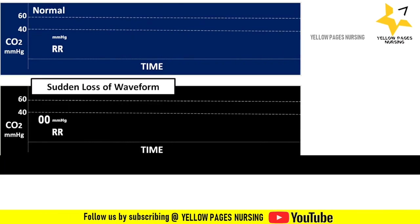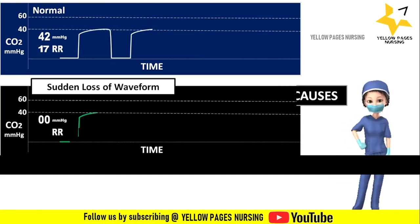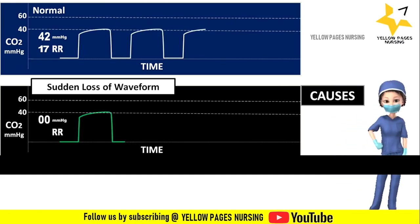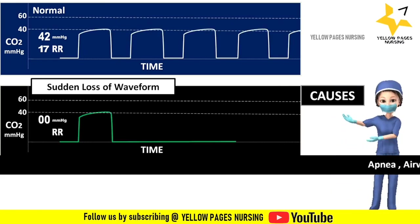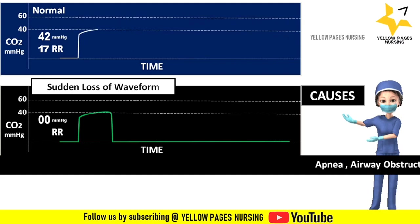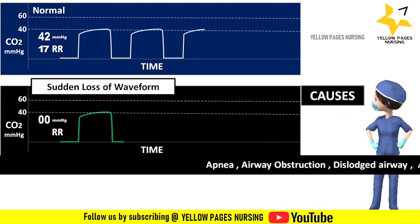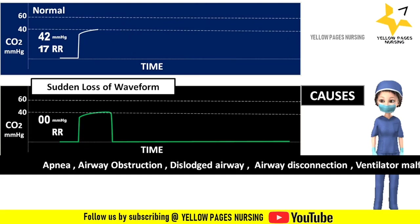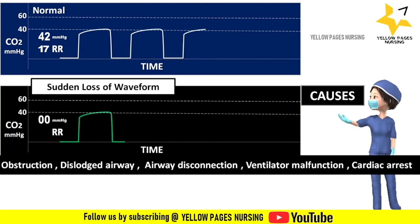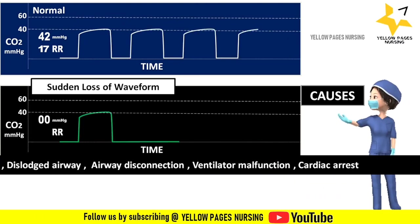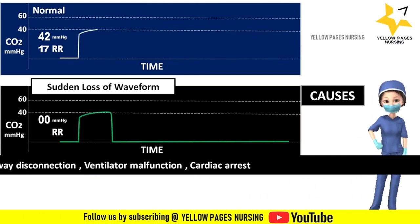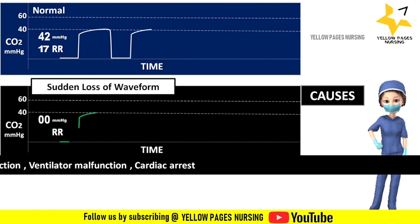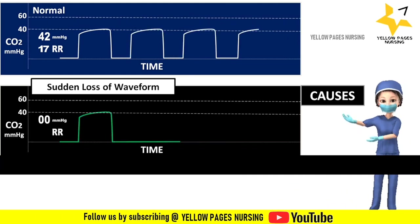Next comes sudden loss of waveform. There is complete loss of waveform, indicating no carbon dioxide present. This may be due to apnea, airway obstruction, dislodged airway, airway disconnection, ventilator malfunction, or cardiac arrest.